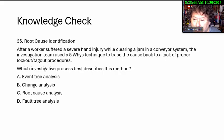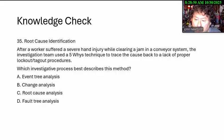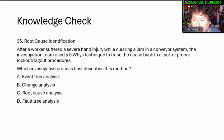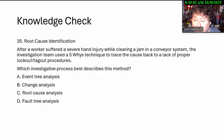Root cause identification. After a worker suffered a hand injury while clearing a jam, the investigation team used five-why techniques to trace the cause back to a proper lockout procedure. Which investigative process describes this method? Options: venture analysis, change analysis, root cause analysis, or fault tree analysis.